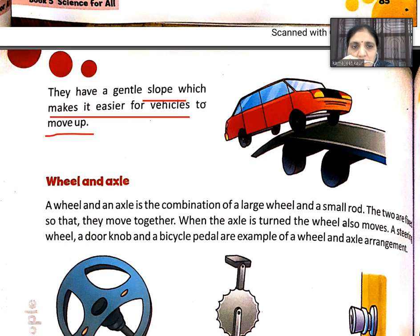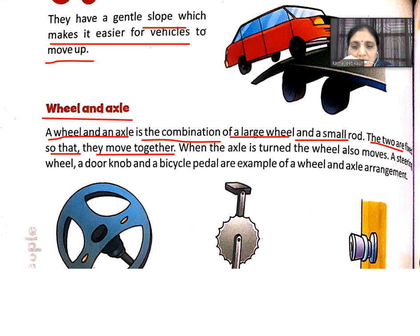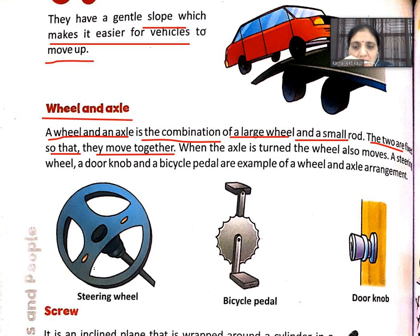Next is wheel and axle. A wheel and axle is the combination of a large wheel and a small rod. The two are fixed so that they move together. You may have seen this in a car — the steering wheel, bicycle, and paddle are examples.